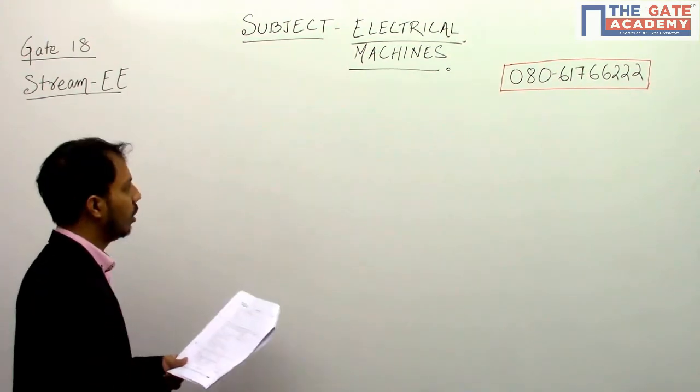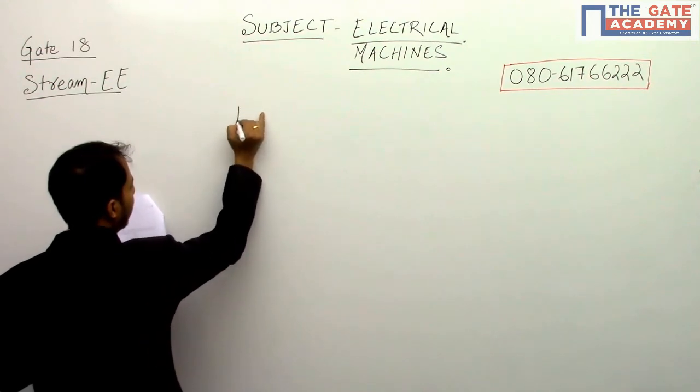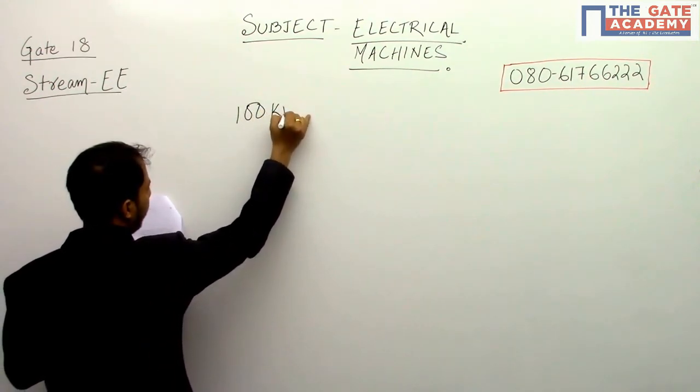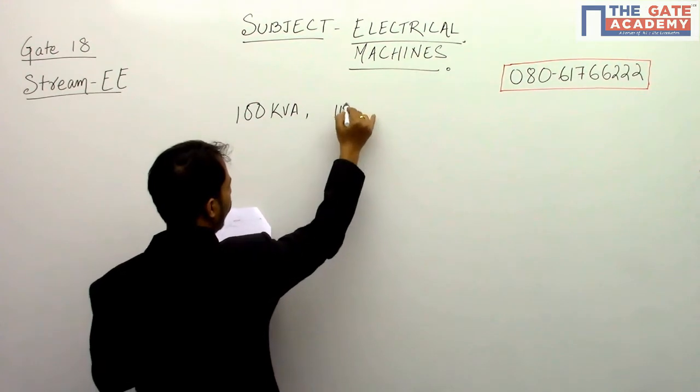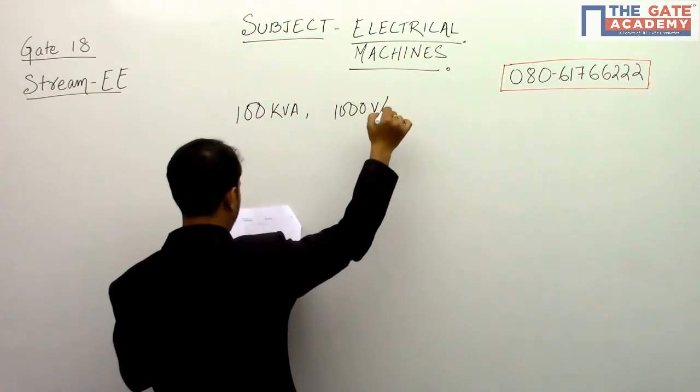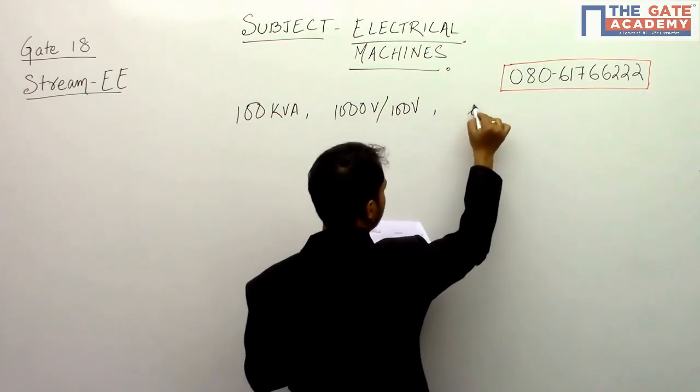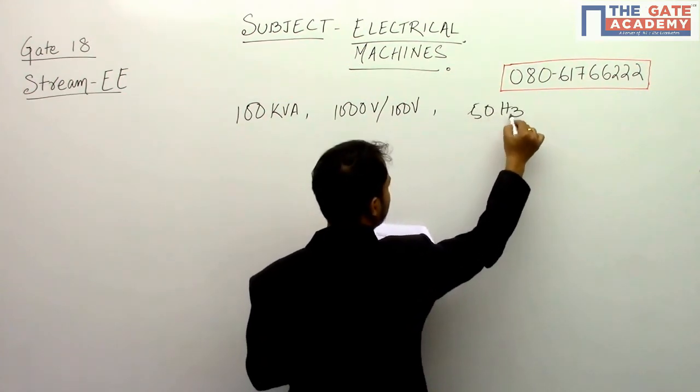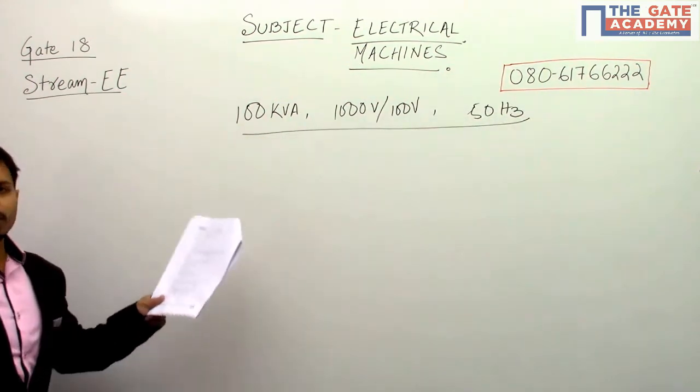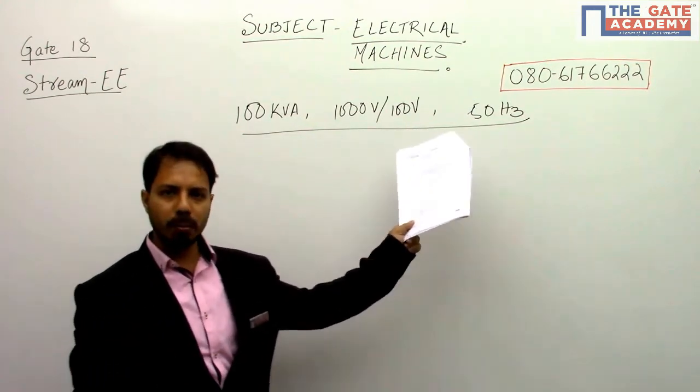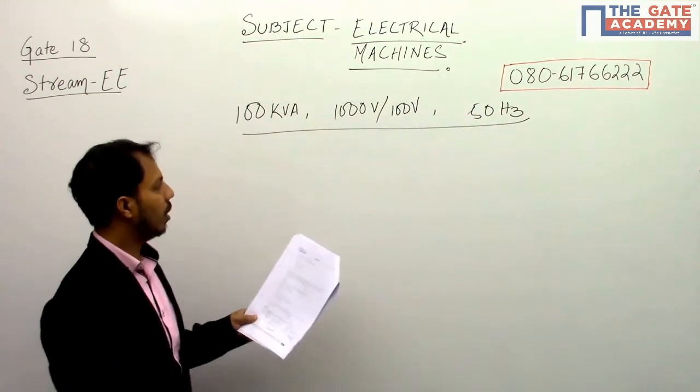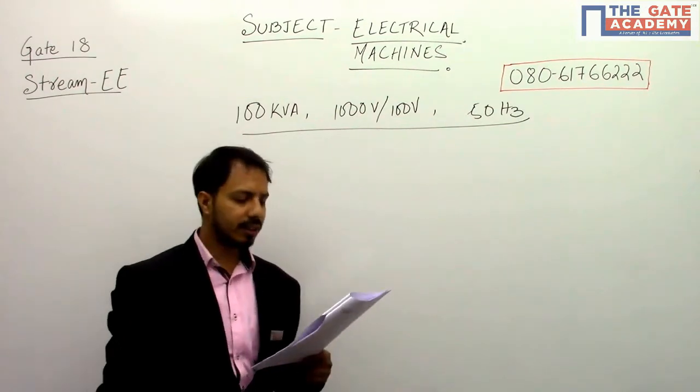Now let us understand what is said in this particular question. First of all, the rating of the transformer is given: it is 100 kVA, 1000 volt by 100 volt, 50 Hertz. This is the rating of the machine. Now this data may be useful, may not be useful, may be redundant also, but these are the rated values.